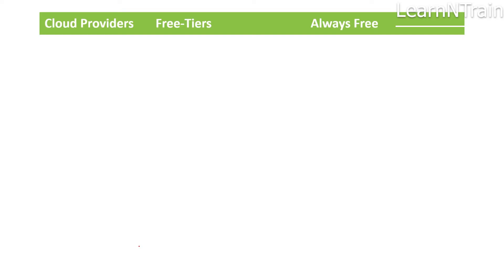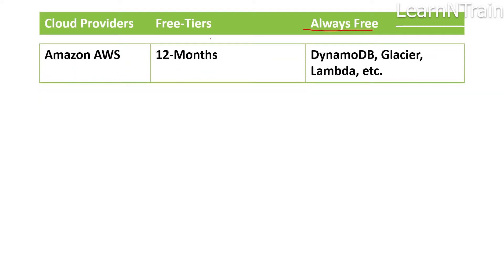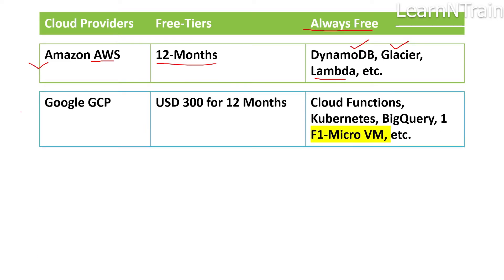Let us now look at some famous cloud providers and their always free tiers. The first is Amazon AWS — they give 12 months of free trial, and in their always free plan you get database, storage, and Lambda functions to execute code on the cloud without needing a virtual machine. Next is Google Cloud Platform: they give $300 USD of free services for 12 months, and in their always free tier they provide Cloud Functions, Kubernetes, BigQuery, and other database and storage features. They also provide one virtual machine.